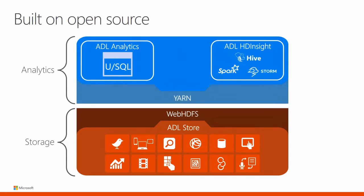Azure Data Lake Analytics lets you focus on the logic of your application, not the distributed infrastructure running it. Built on Apache Yarn and designed for the cloud, the analytics service can handle jobs of any scale instantly by simply setting the dial of how much power you need. It includes USQL, a new query language that unifies the ease of use of SQL with the expressive power of C#.